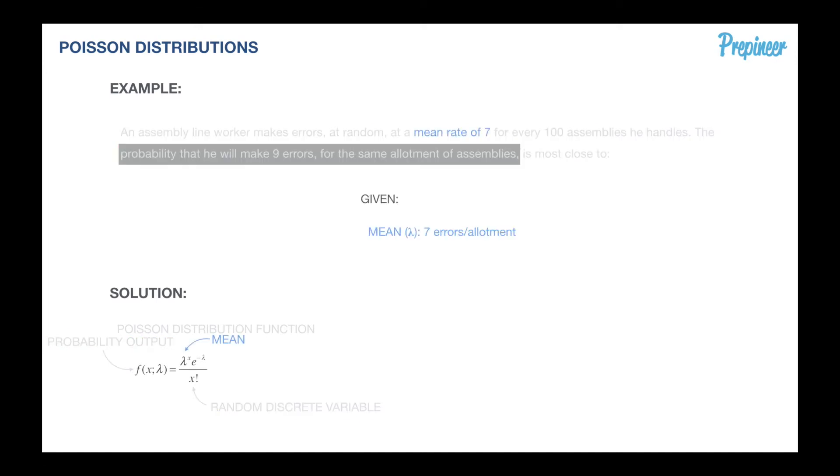Hundred assemblies is our interval. This remains the same for the probability that we are assessing. This time our random variable is going to be nine errors. We pull over that general formula and plug in our information. This time you see seven remains the same as it did in the previous problem, but we change the orange value to nine.